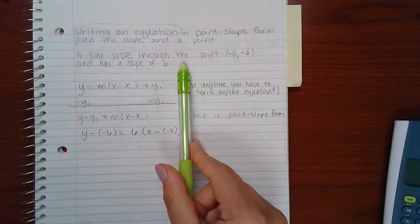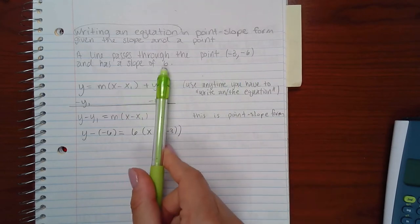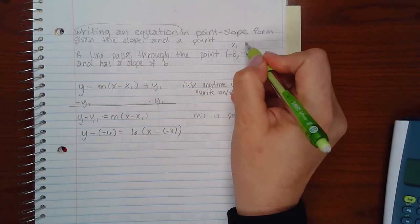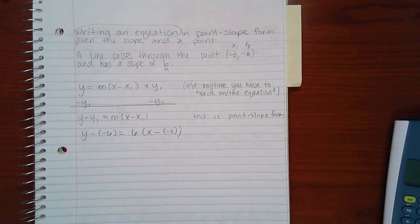These things are given from the statement. This is my x coordinate, my y coordinate, and my slope. If you want to label them, you label this one x1, y1, and your slope is always labeled as an m.